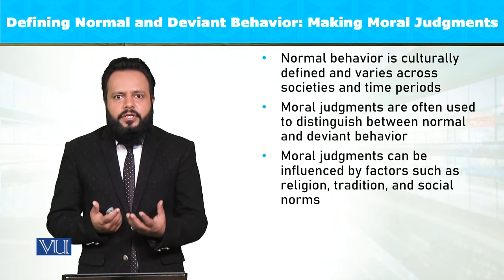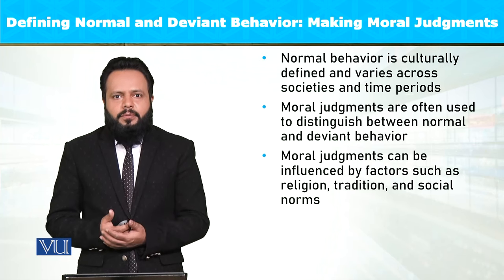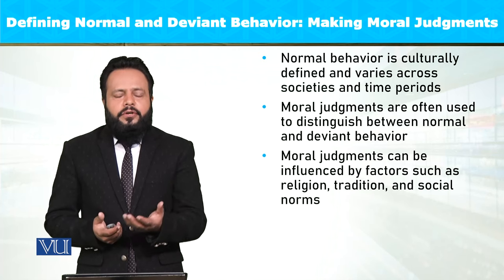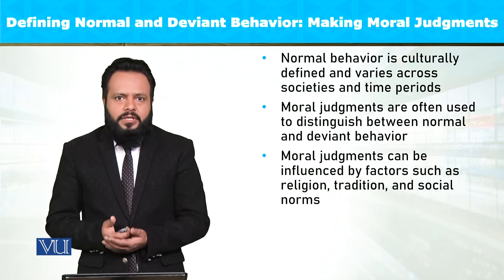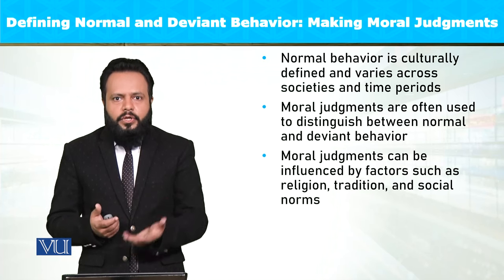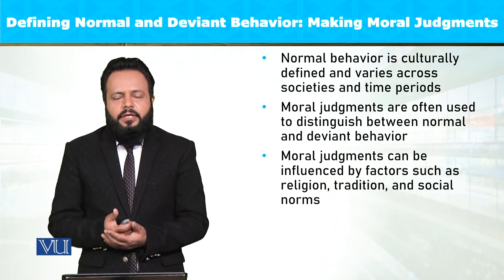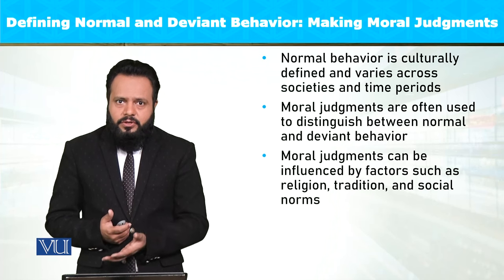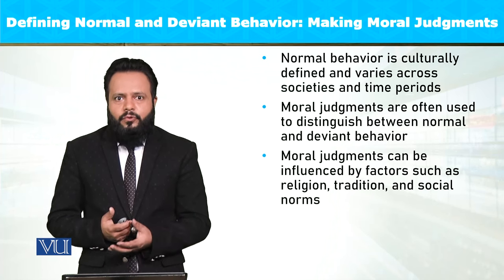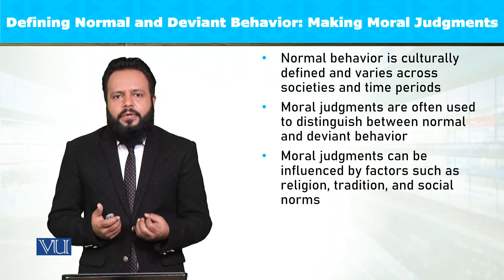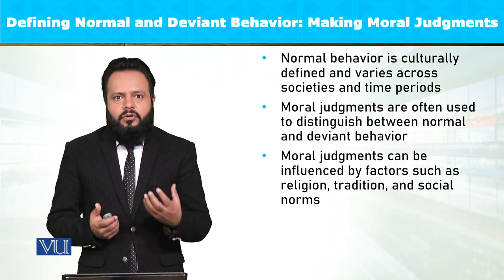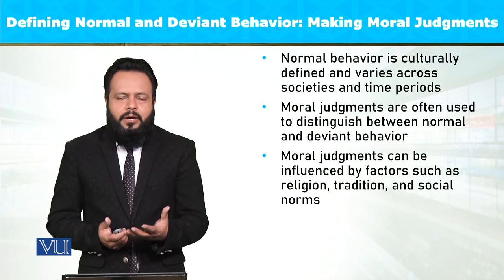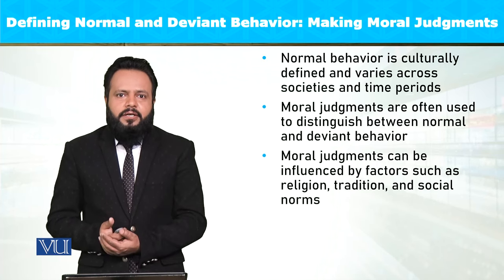یہ سارے standards آپ کی morality یا آپ کی ethical values سے برآمد ہوتے ہیں۔ Moral systems آپ کو right اور wrong کی definition بتاتے ہیں، اچھے اور برے کے درمیان فرق بتاتے ہیں۔ Right اور wrong کے derivative sources آپ کا معاشرہ، آپ کا مذہب، یا different cultural contexts ہو سکتے ہیں، اور یہی آپ کے لیے normality کو define کرتے ہیں۔